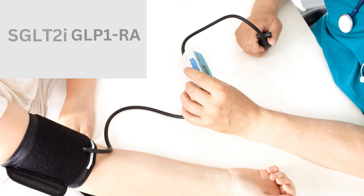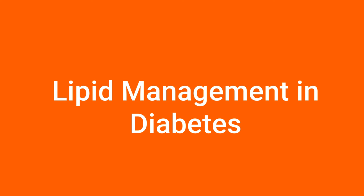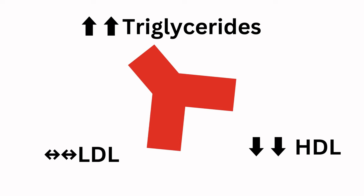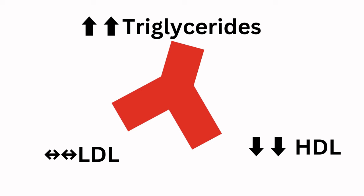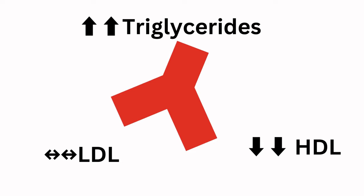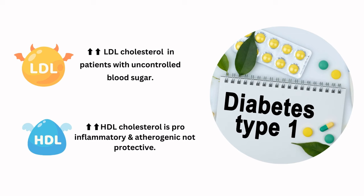In type 2 diabetes, there is the classic triad of elevated plasma triglycerides and triglyceride-rich lipoproteins, normal to mildly elevated LDL, and low HDL. In type 1 diabetes it is different: high LDL cholesterol values are seen with uncontrolled blood sugar, and high levels of HDL cholesterol might be pro-inflammatory and atherogenic instead of being protective.